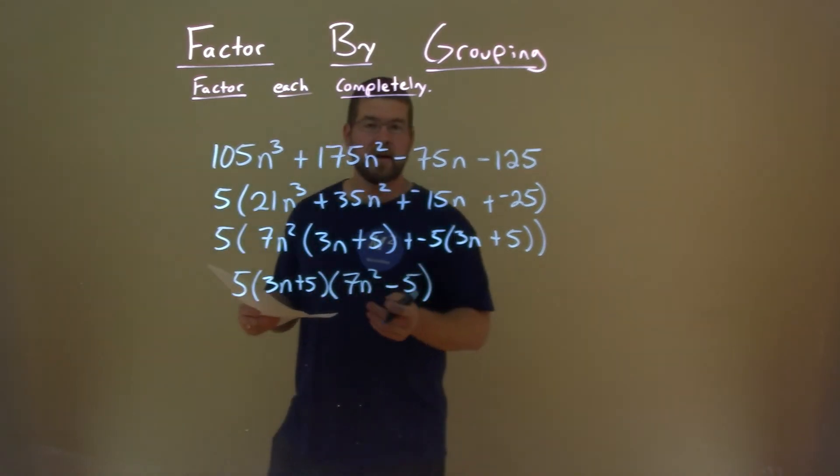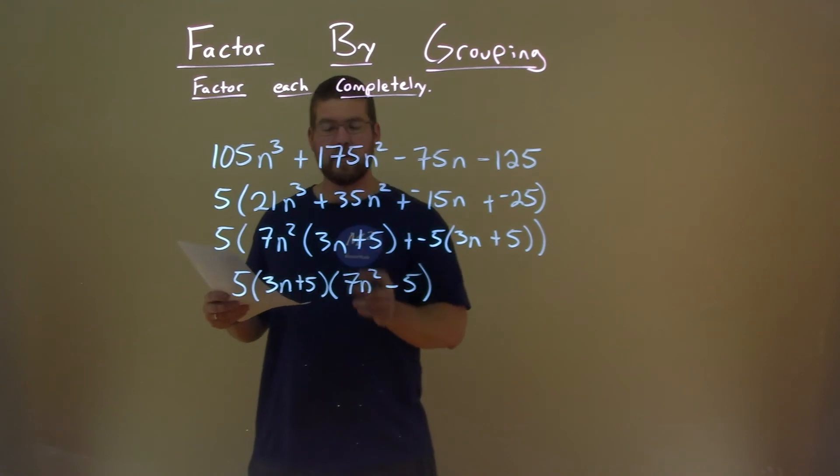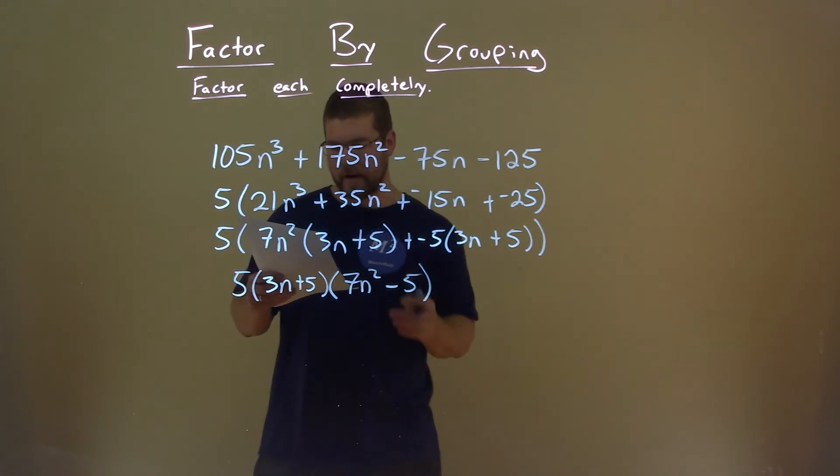And now we actually have our final answer: 5 times 3n + 5 times 7n² - 5.